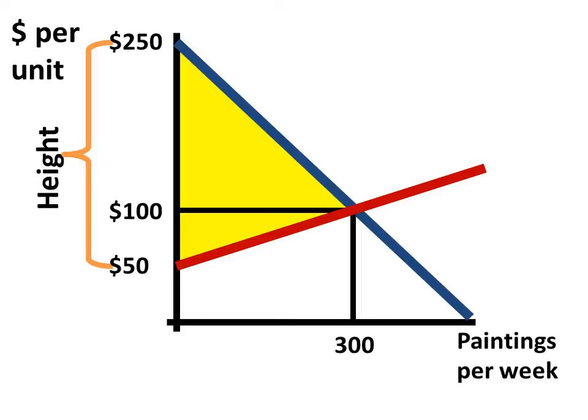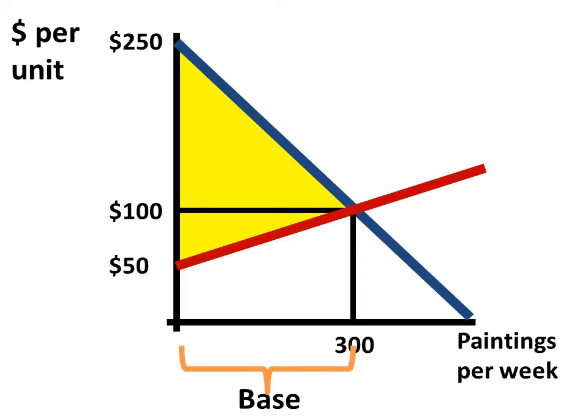And we could do this in a slightly simpler way than adding all of them up. We could use the area of a triangle. So the height of the triangle is going to be the difference between the top of the demand curve, where the demand curve intersects the price axis, here at $250, and where the supply curve intersects the price axis, here at $50. The base of the triangle is going to be 300 units, so the 300 units that are purchased in equilibrium.